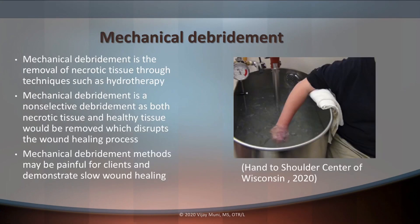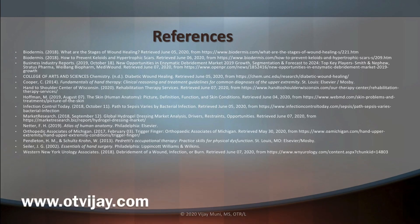The last debridement process is called mechanical debridement. In OT school, we talked about physical agents and modalities such as whirlpool, or hydrotherapy, which is one mechanical debridement technique. Unlike enzymatic debridement, mechanical debridement is non-selective, meaning both necrotic and healthy tissue will be removed. This can disrupt the wound healing process and can be painful for clients, so it's often not recommended as there are much more effective and comfortable methods available.